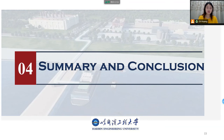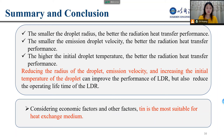Finally, let me make a summary. The following conclusions can be drawn: First, the smaller the droplet radius, the better the radiation heat transfer performance. Second, the smaller the emission droplet velocity, the better the radiation heat transfer performance. Third, the higher the initial droplet temperature, the better the radiation heat transfer performance. Reducing the radius and emission velocity, and increasing the initial temperature of the droplet can improve LDR performance, but also reduce the operating lifetime of the LDR. Considering economic factors and other factors, tin is the most suitable heat exchanging medium.